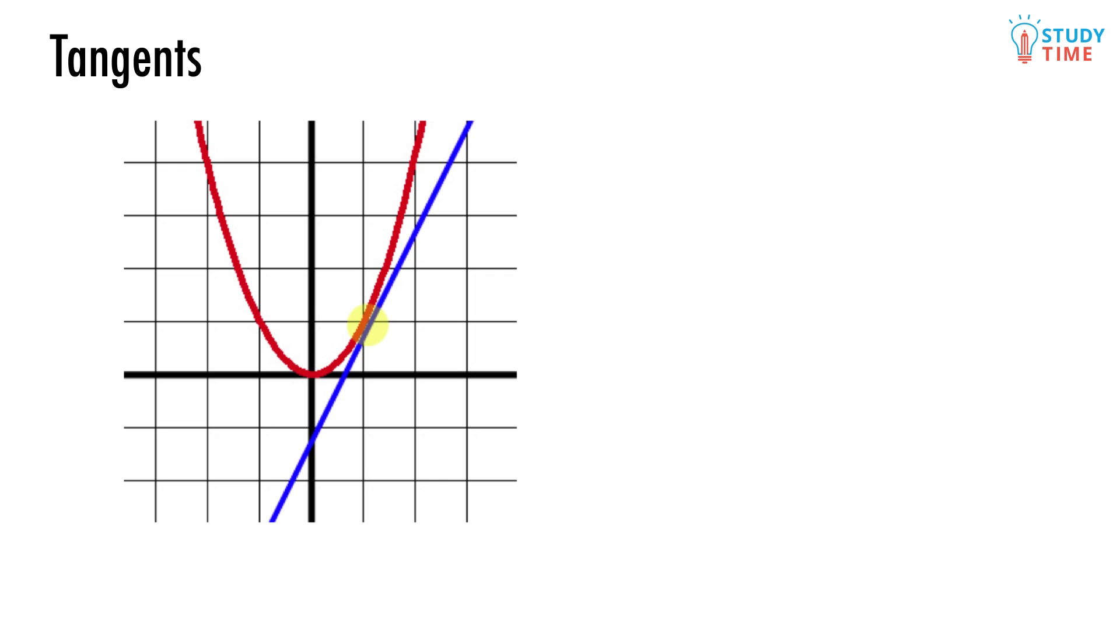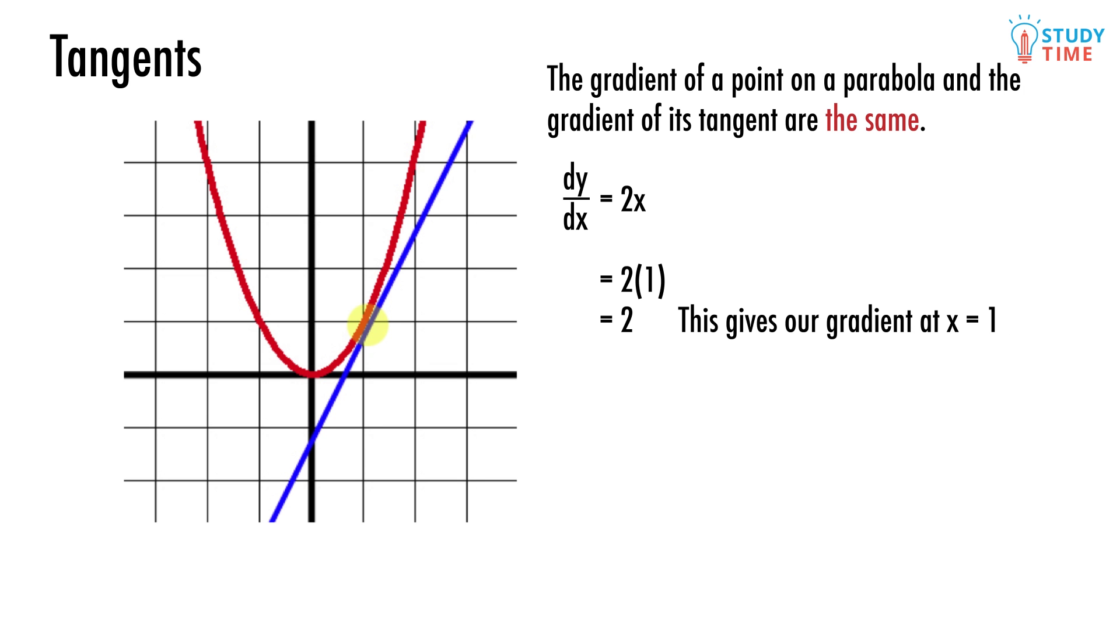If we know where the tangent touches the parabola, then we can find its equation. We start by finding the gradient of the straight line. Since we know that the point where they touch is x equals 1, we also know that the gradient of the parabola is dy dx equals 2x. We can just replace the x with a 1 and find the gradient of the straight line.